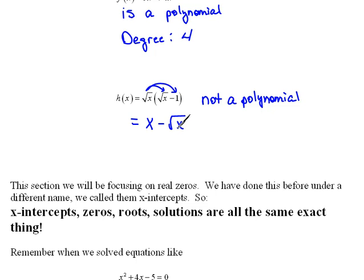This is not a polynomial because we have a fractional exponent here on x. This is not a non-negative integer because this would be the exact same thing as saying x to the 1 half power. And 1 half is not an integer.